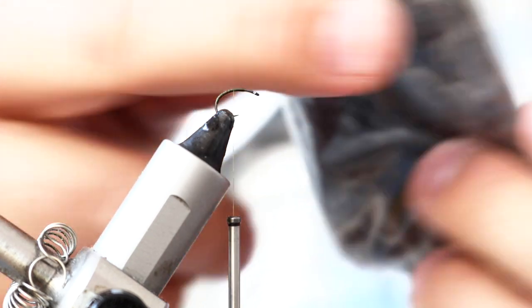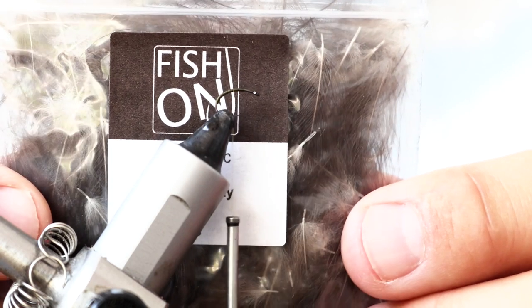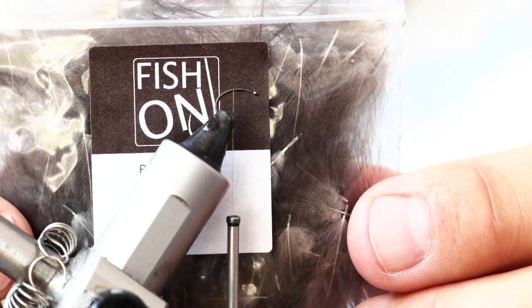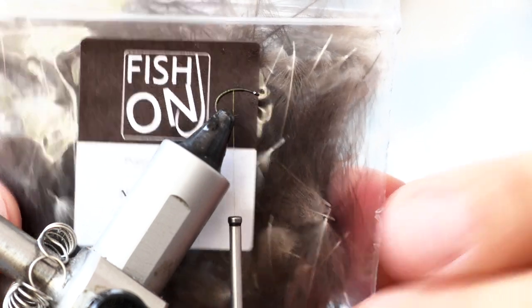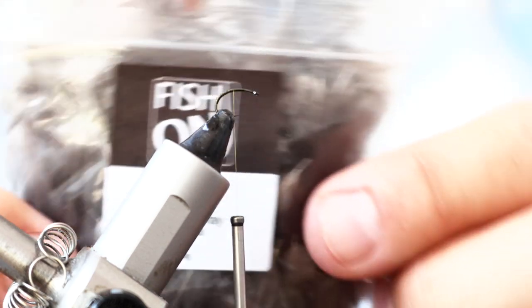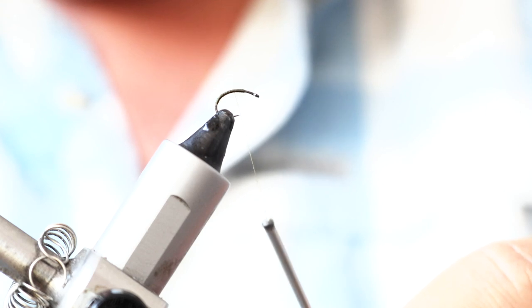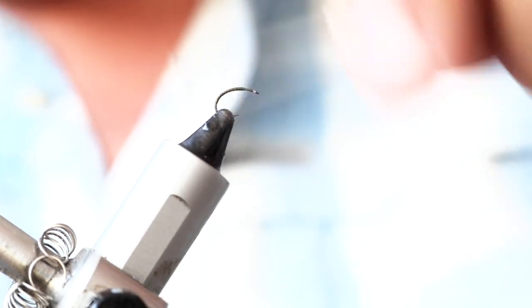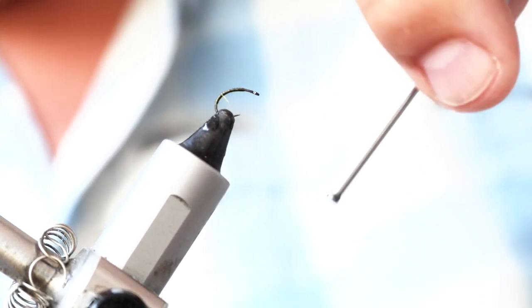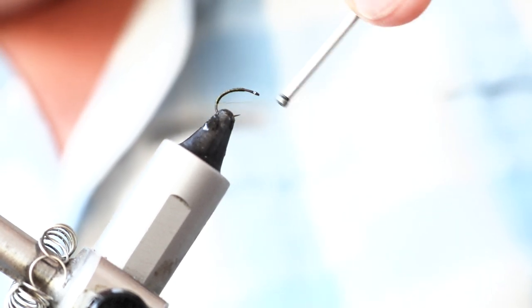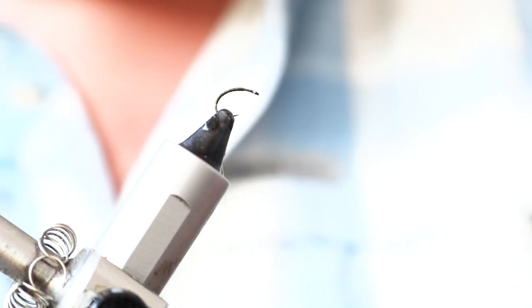And the only other material is some CDC feather. This is the premier stuff from Fish On, which is really nice, hand-sorted by people like John Tyzak. It's got to be good stuff, hasn't it? I've tied on with my thread. I'm just going to bring it round the corner and let my thread bobbin hang down.